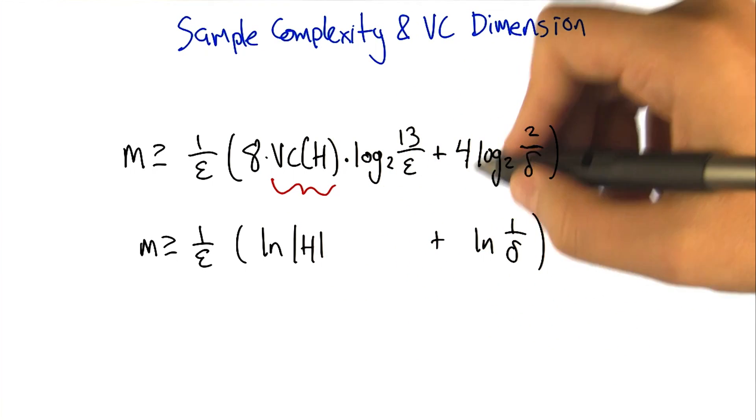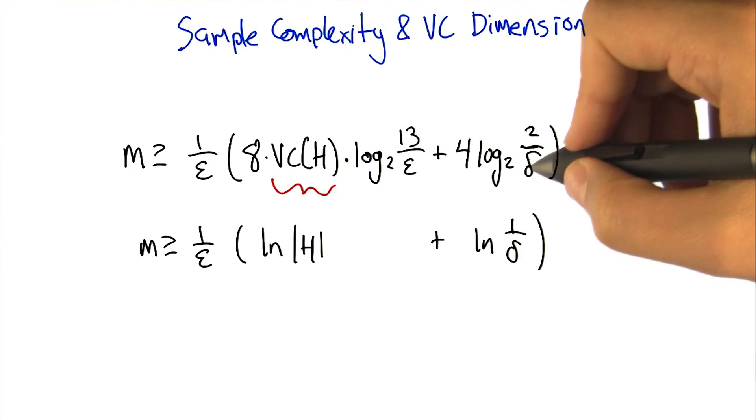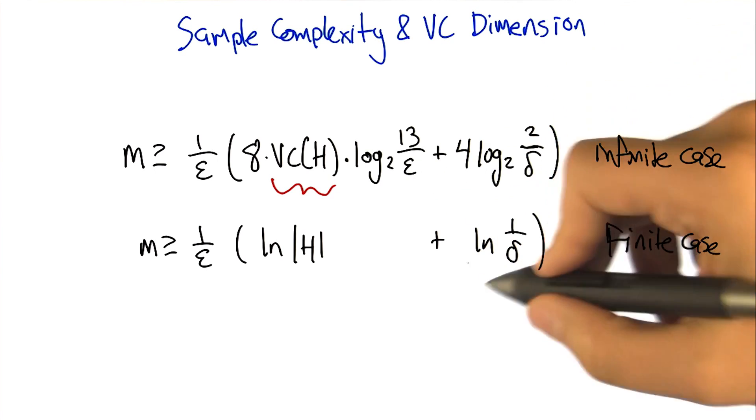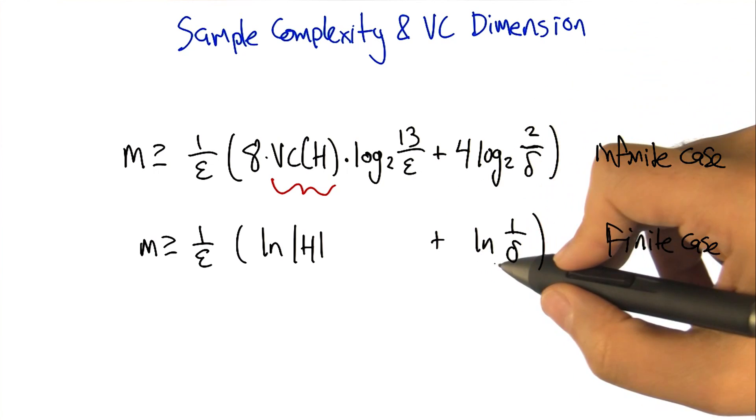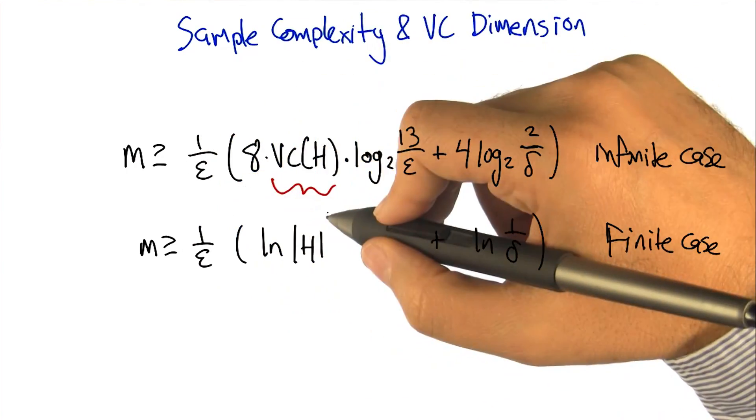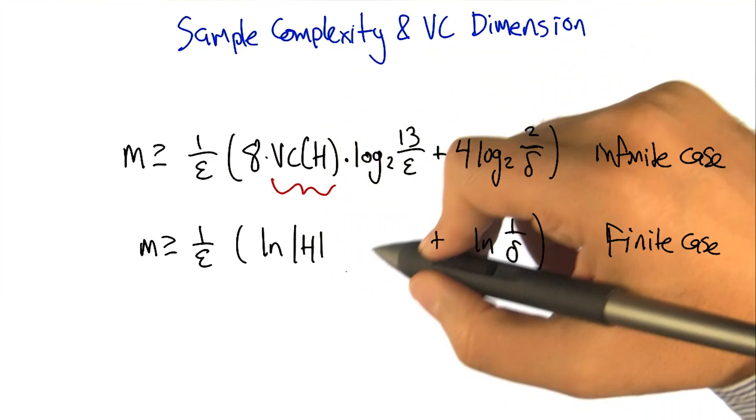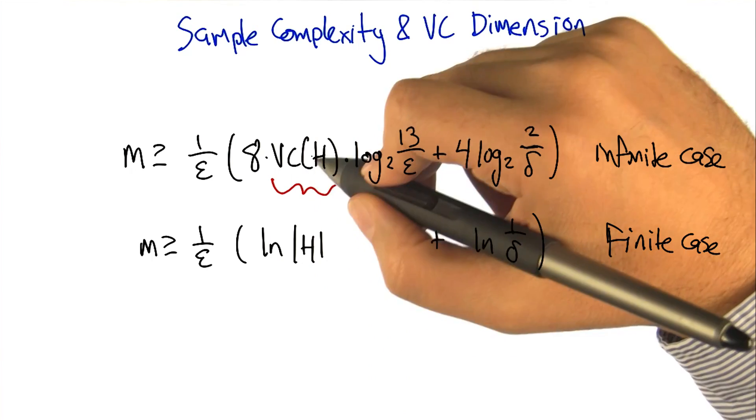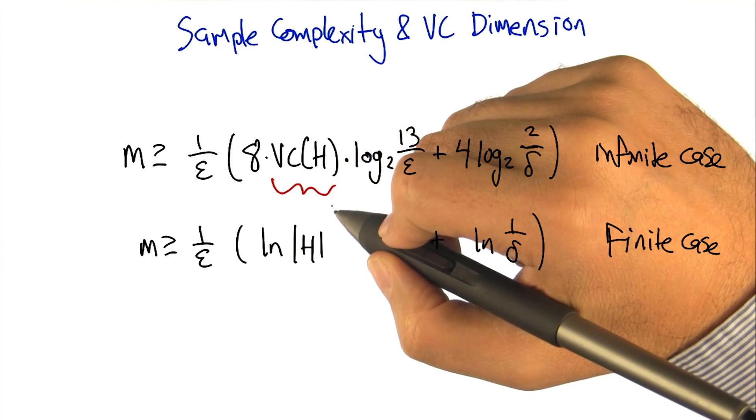Yes, that's exactly right. And in fact, things actually map out pretty similarly in the finite case and the infinite case. There's an additive term having to do with the error, the failure probability. There's 1 over epsilon in the front of it. And then this quantity here having to do with the hypothesis space is either the size of the hypothesis space or the dimension of it depending.